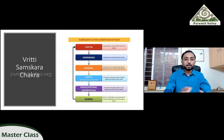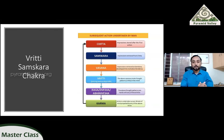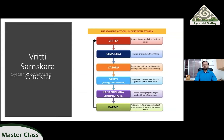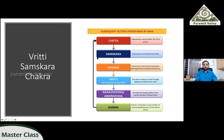I want to run a bit more on this Vritti Samskara Chakra. The cycle can start from anywhere. A sense perception translates into a samskara, and repetition of that particular cycle constantly records that particular experience in the chitta — that is the recording that happens. Anything that continuously keeps happening creates a stronger impression on the chitta. Those are termed as samskaras.